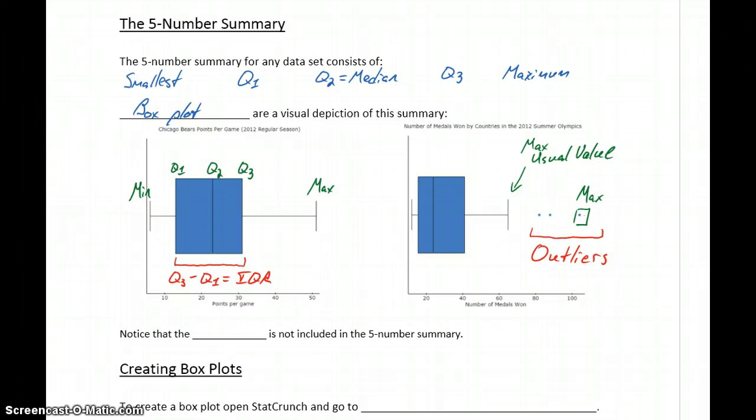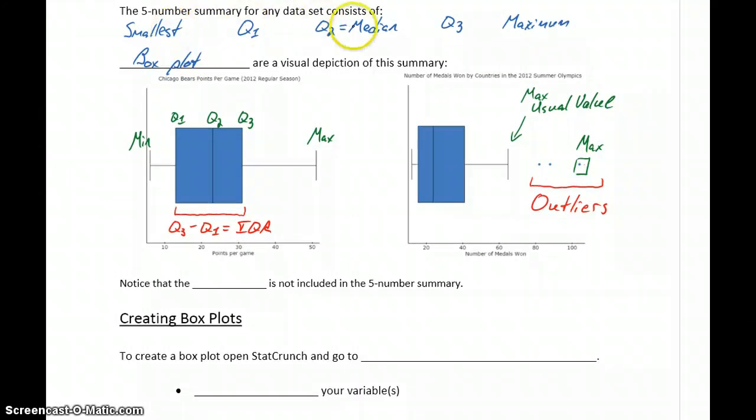One thing to notice about box plots: it includes the smallest value, the median, maximum value, but one very common measure that we take a look at in statistics or just in life is the mean of that dataset, which is specifically not included in this five-number summary and not represented anywhere on the box plot.